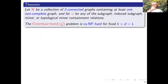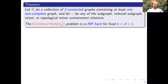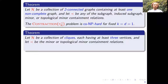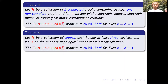In particular, for feedback vertex set the collection is a collection of cycles — they are 2-connected and many are not cliques. Similarly for odd cycle transversal, the collection is odd cycles — they are 2-connected and none are cliques. So the problems of dropping the feedback vertex set and odd cycle transversal by at least one by one contraction, i.e., k equal d equal one, are co-NP-hard. We also prove that if H is a collection of cliques each with at least three vertices, for the minor and topological minor relations, the contraction problem is again hard for fixed k equal d equal one.